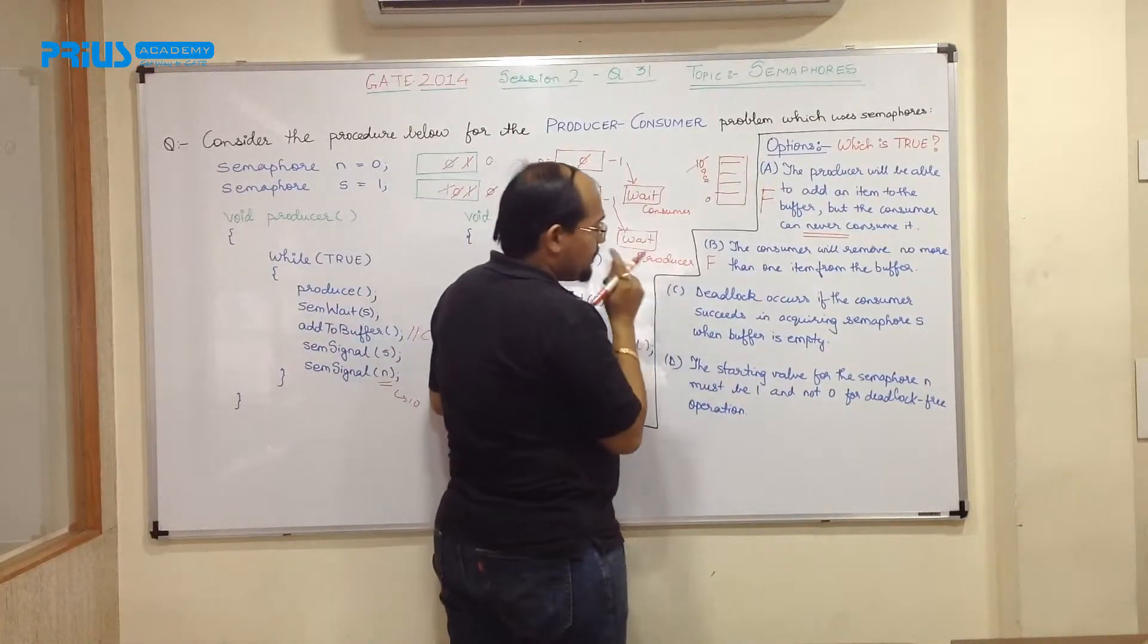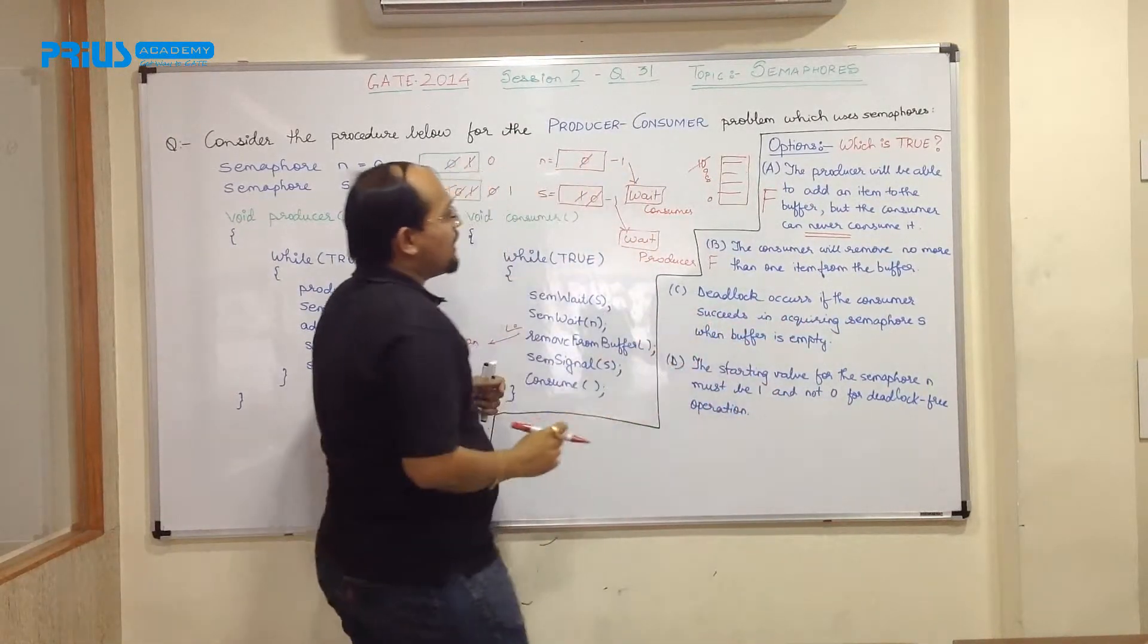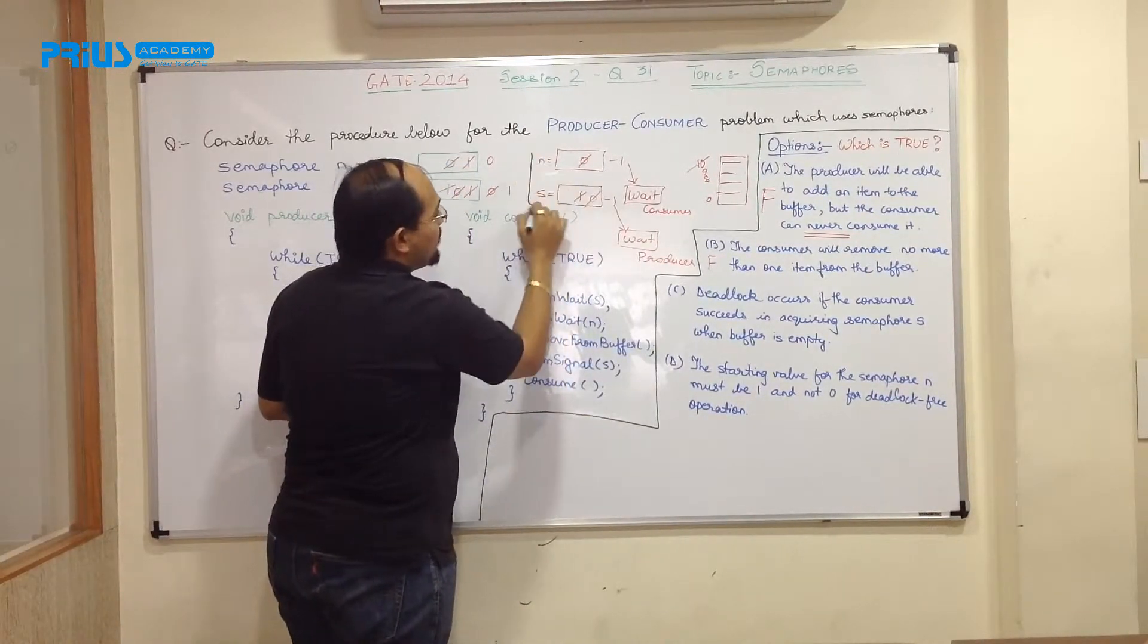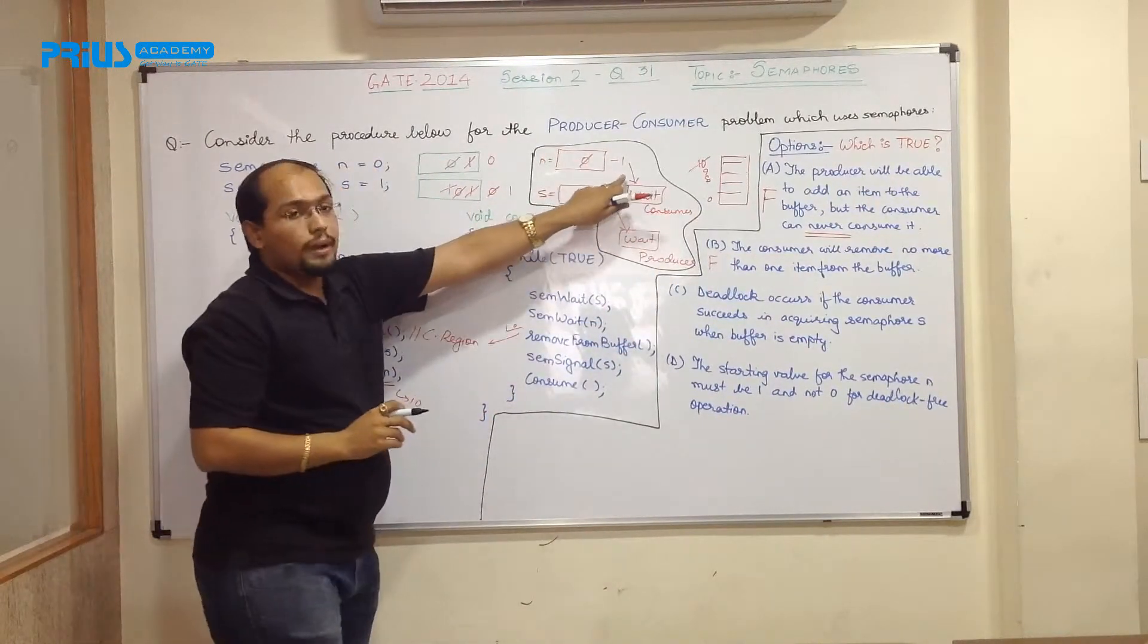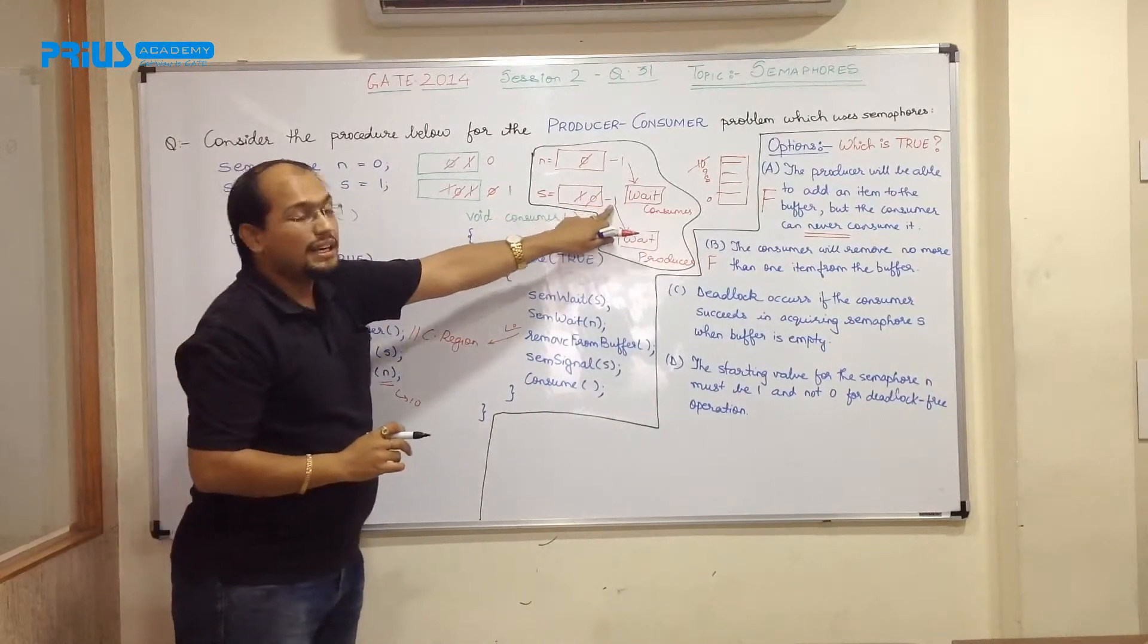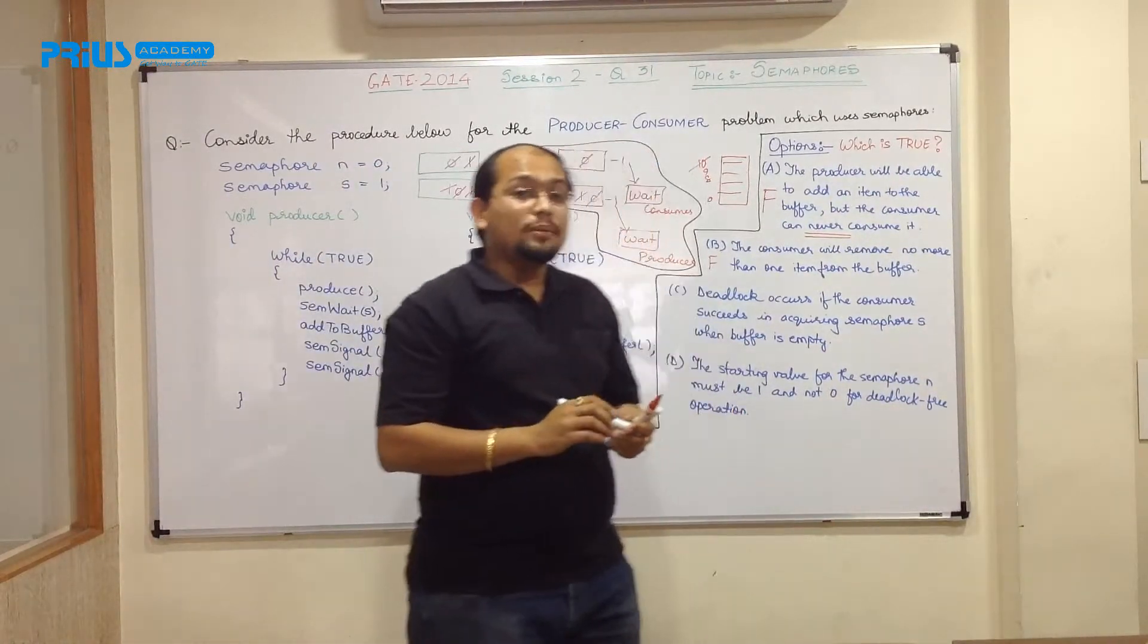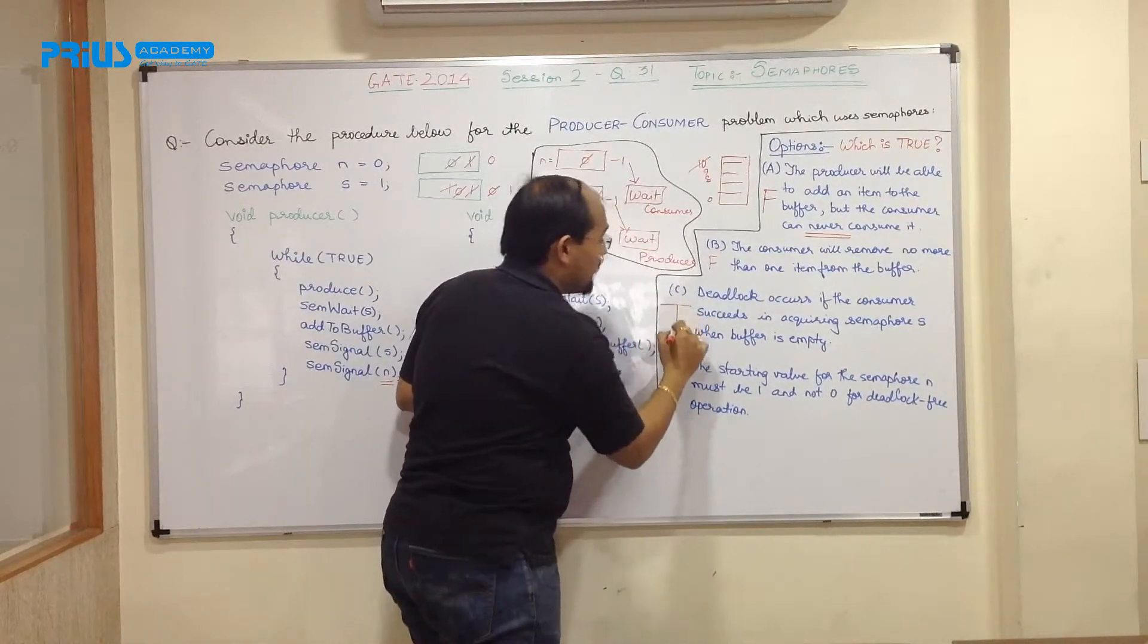Moving to option C, deadlock occurs if the consumer succeeds in acquiring semaphore S when buffer is empty. Yes, this is what we have already seen that if consumer is executing first, then this situation was arising. If you remember, n is equal to 0, minus 1, that means consumer is waiting and after that, if producer is coming, then producer is also making it to minus 1 and he is also waiting. As a result, producer and consumer both are waiting, waiting, waiting and ultimately it leads to deadlock. So I can say this is definitely true.